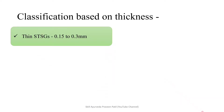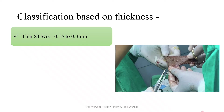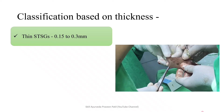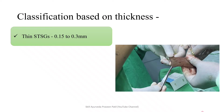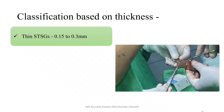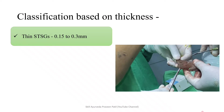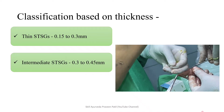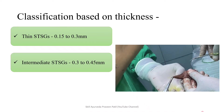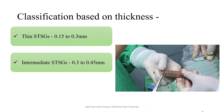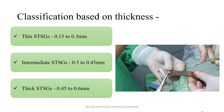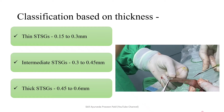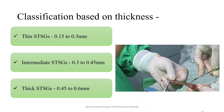Classification based on thickness: thin, intermediate, and thick. Thin split thickness skin graft has a thickness varying from 0.15 to 0.3 mm, intermediate from 0.3 to 0.45 mm, and thick skin graft refers to a thickness from 0.45 to 0.6 mm.